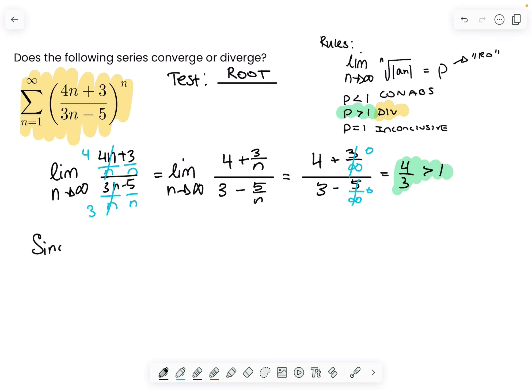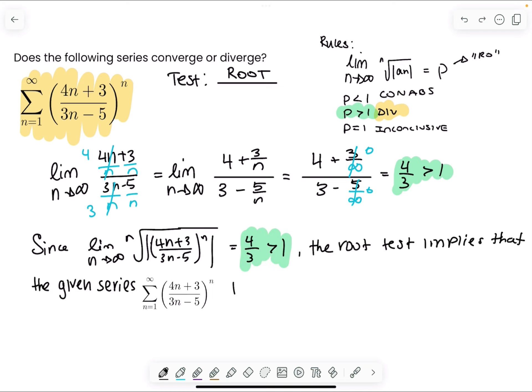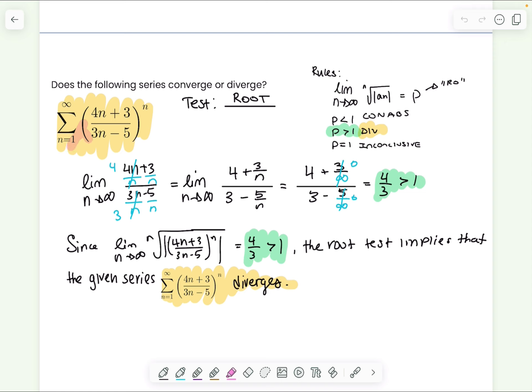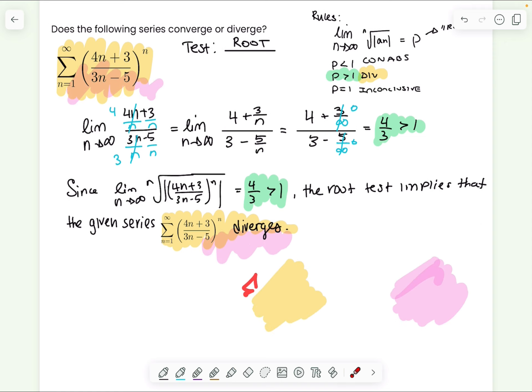So for our conclusion, since the limit of the nth root of |an+3| to the n is equal to 4 thirds, which is greater than 1, the root test implies that the given series diverges. Because if the series with absolute value diverges, then the series without absolute value will also diverge.